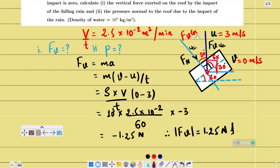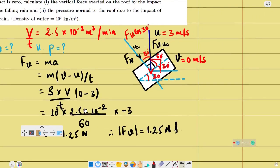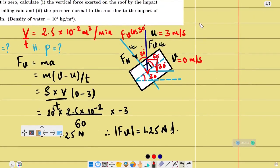So F_n equals F_v cos 30 degrees. Resolving the component, the particular component is F_v cos 30 degrees. So F_n equals F_v cos 30 degrees.